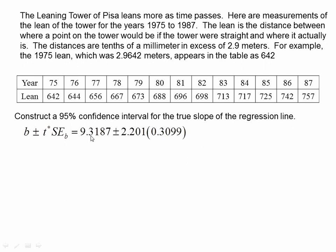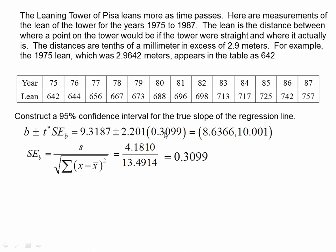This comes from our B. This is what we calculated earlier. This is what we calculated earlier. Remember, we had S divided by the sum of our residual square rooted. And we got this value. So when we calculate this out, we get our interval here.